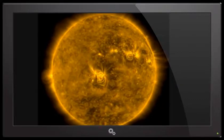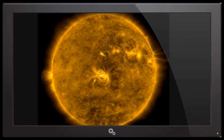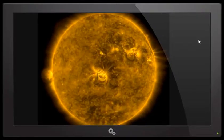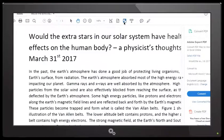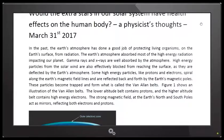And ladies and gentlemen, in no way, shape or form are we out of the woods. We are just feeling the precursor of what is to come. So let me go ahead and get directly into the report that she filed and sent over to me. This also deals with extra stars, such as the brown dwarf star in our solar system. The heading of her report states, would the extra stars in our solar system have health effects on the human body? A physicist thoughts, March 31st, 2017.